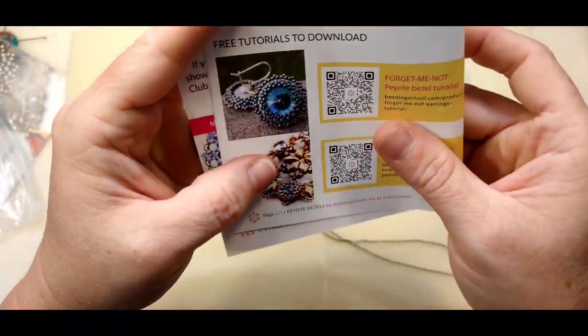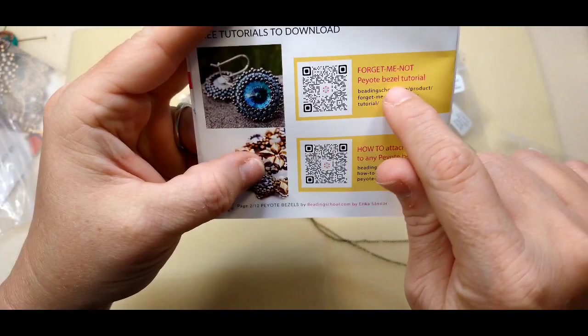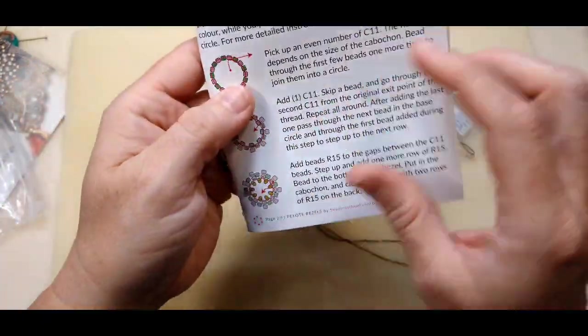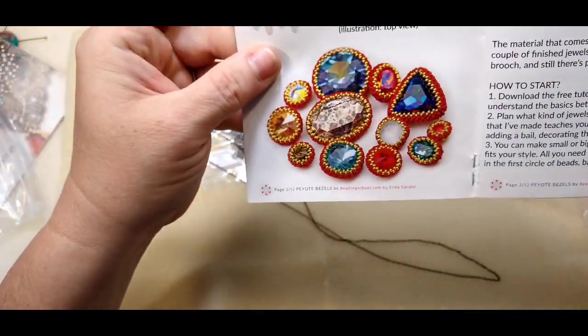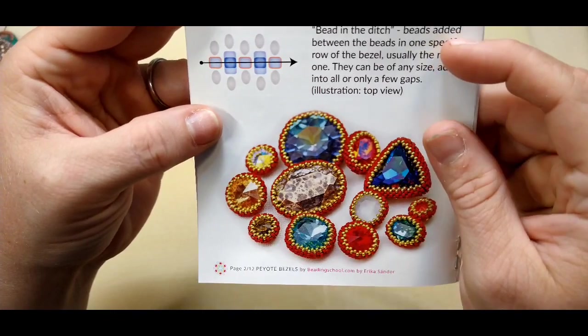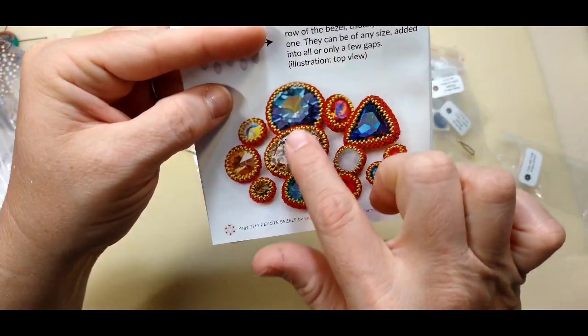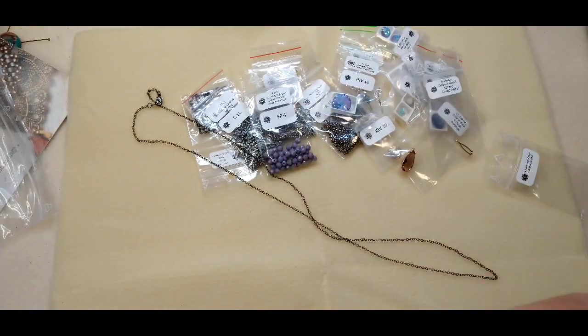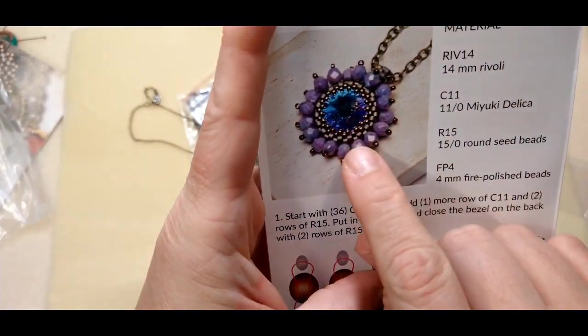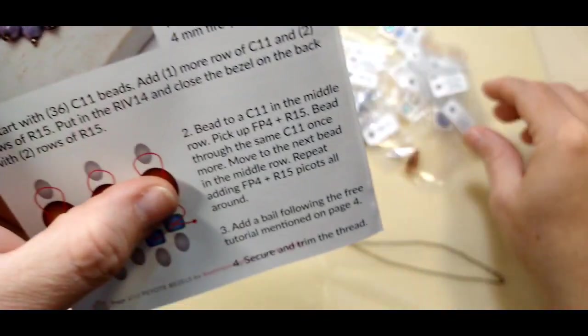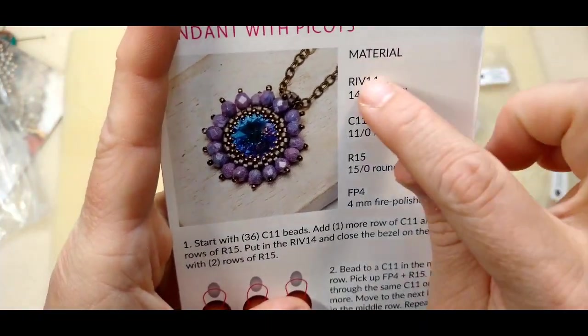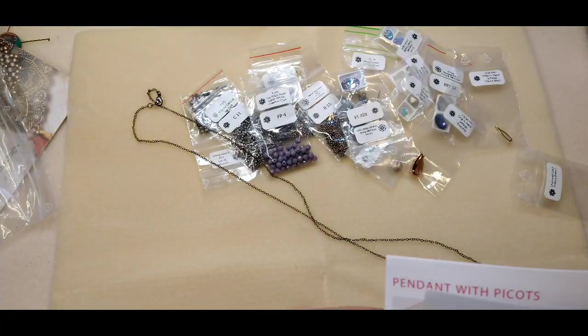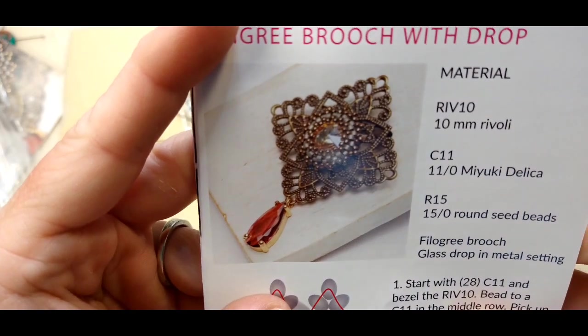We have our, these are free tutorials to download when you buy the box. The forget me not peyote bezel tutorial. These are earrings. How to attach a bell to any peyote bezel. Then you've got your, these are called bead in the ditch. Beads added between beads in one specific row of a bezel. This is showing you how to bezel all different sizes and shapes of rivolis and stones. And then we have the pendant with the picots on it. Look how pretty. This would be the pendant you would make. See your big stone here in the middle. It's beautiful. And it tells everything you need here. It all comes in the box. And then the earrings to match your pendant. Beautiful. And then last but not least, here's the filigree brooch with the drop.